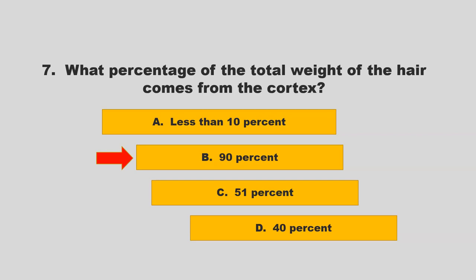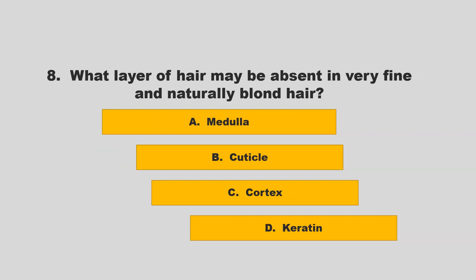What layer of hair may be absent in very fine and naturally blonde hair? Is it medulla, cuticle, cortex, or keratin?